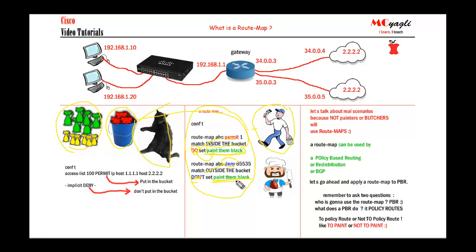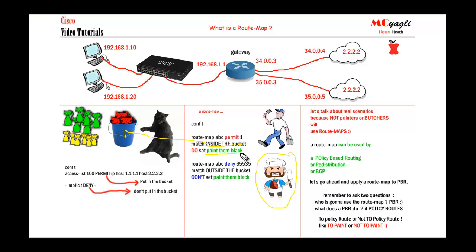I cannot emphasize enough the importance of these two questions: who is going to use it, and what does he do? Now imagine instead of a painter, we have a butcher using this route map. The route map goes: route-map ABC permit 1 — match inside the bucket — set slaughter. And route-map ABC deny [sequence] — match outside the bucket — don't set slaughter. The butcher will slaughter the red cats inside the bucket because it says 'do slaughter,' and he will do nothing to the ones outside the bucket.